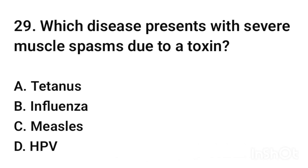Question number 29. Which disease presents with severe muscle spasm due to a toxin? The correct answer is option A: tetanus.